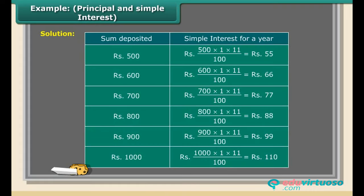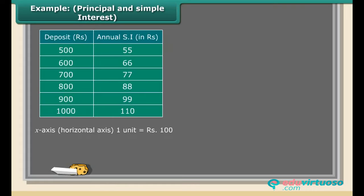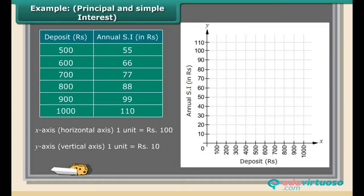Solution: A. Mark the deposit in rupees on x-axis, horizontal axis with 1 unit is equal to rupees 100. B. Mark annual simple interest in rupees on y-axis, vertical axis with 1 unit is equal to rupees 10. C. Plot the points (5, 55), (6, 66), (7, 77), (8, 88), (9, 99), (11, 10). D. Join the points.